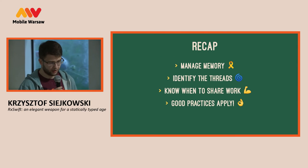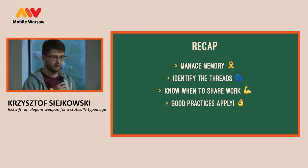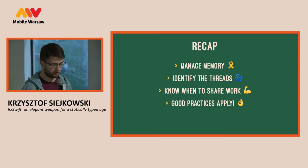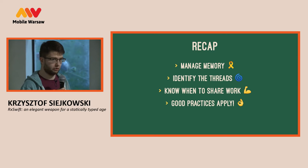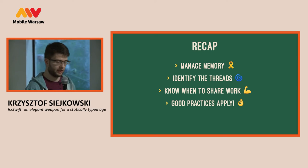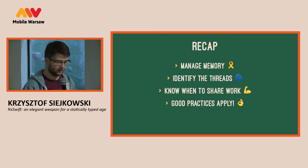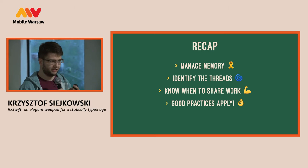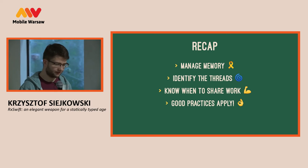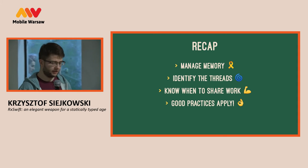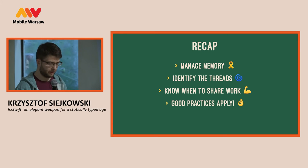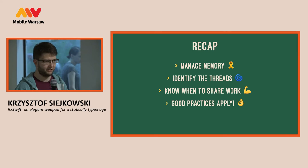Let's recap the four common problems when working with RxSwift. Memory management — you have to do that because ARC won't help you if you don't help ARC. Identify the threads, because you want to know what thread the code is executed on, especially if you're touching UI code. Know when to share work — if there are multiple subscriptions, there's a good probability you want to share work. And don't forget the good practices you've already been using just because you're using a new library.